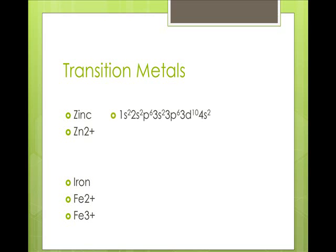So here's zinc: 1s2, 2s2, 2p6, 3s2, 3p6, 3d10, 4s2. When we have a zinc 2 plus ion, we have a full third energy level with that 3d10, because we've lost those two 4s electrons.